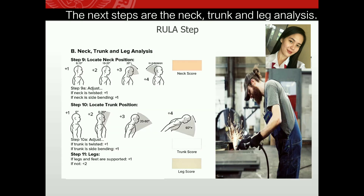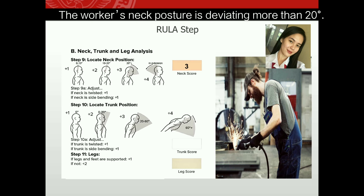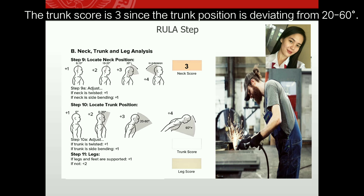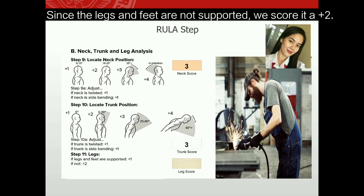The next steps are the neck, trunk, and leg analysis. Step nine is to locate and score the neck position. The worker's neck posture is deviating more than 20 degrees, so we score it a plus three. Step ten is the trunk position, scored three since it deviates from 20 to 60 degrees. Step eleven is the leg score; since the legs and feet are not supported, we score it a plus two.